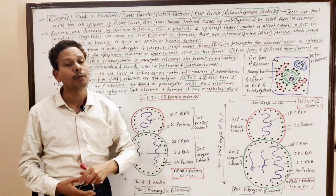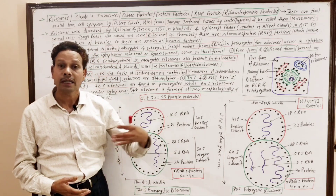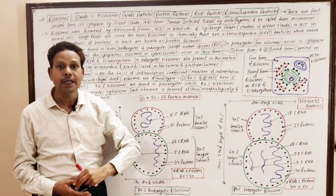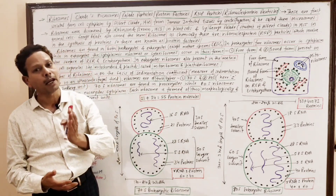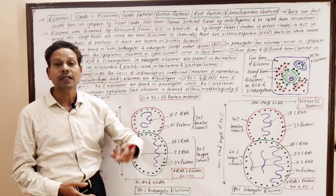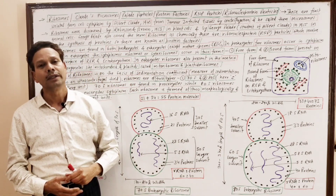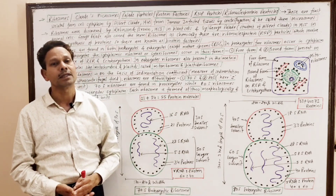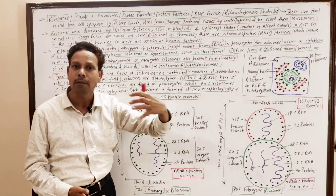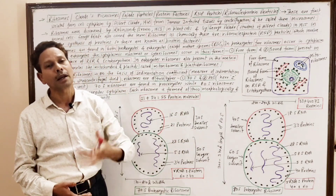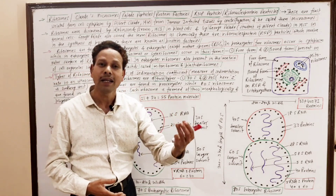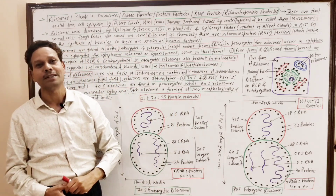In today's lecture we'll discuss ribosomes, another cell organelle. Ribosomes are also called protein factories, microsomes, George Palade particles, or Claude's microsomes. These are protein factories as they are involved in the synthesis of proteins. These are also named RNP particles — ribonucleoprotein particles — because ribosomes are made up of RNA and proteins.